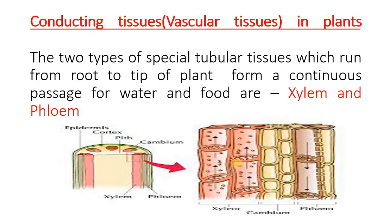Let's study in detail about the conducting tissues in plants. The conducting tissues are also called vascular tissues because vascular means any vessel or cells which carry fluids - fluid may be water, blood, or liquid food. There are two special types of tubular tissues which run from root to the tip of the plant, forming a continuous passage of water and food. These two conducting tissues are xylem and phloem. You can see in the diagram xylem and phloem - the phloem makes the outer part and the xylem is the inner one, as seen in the transverse section of the stem.